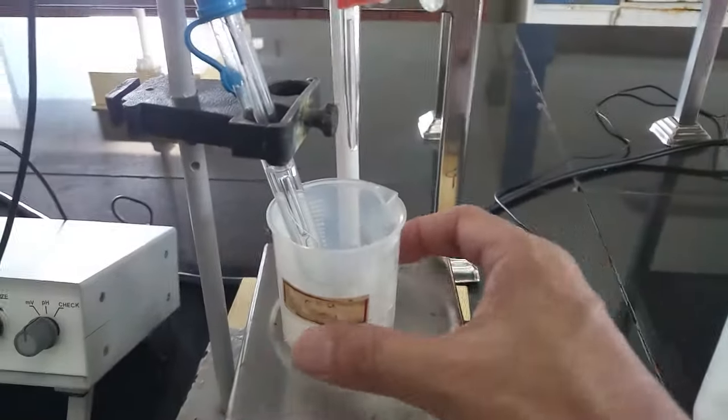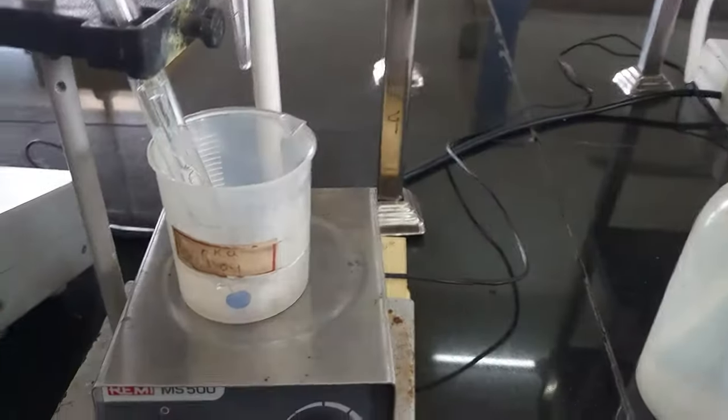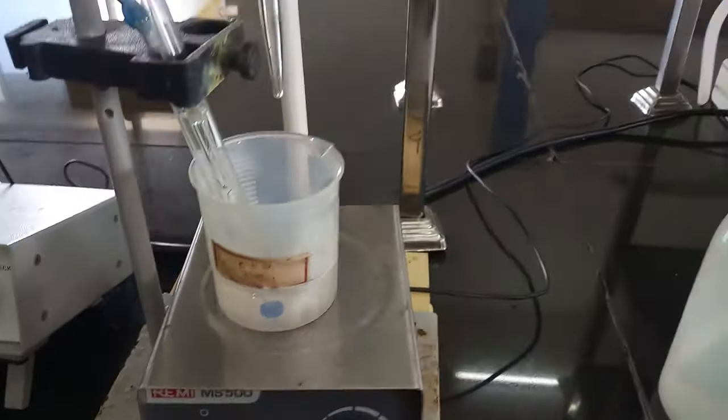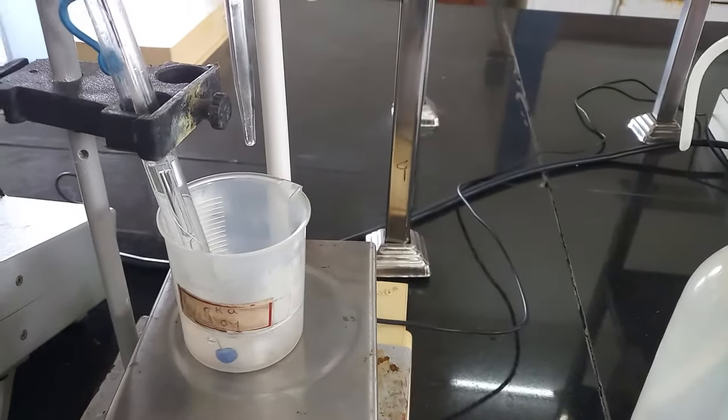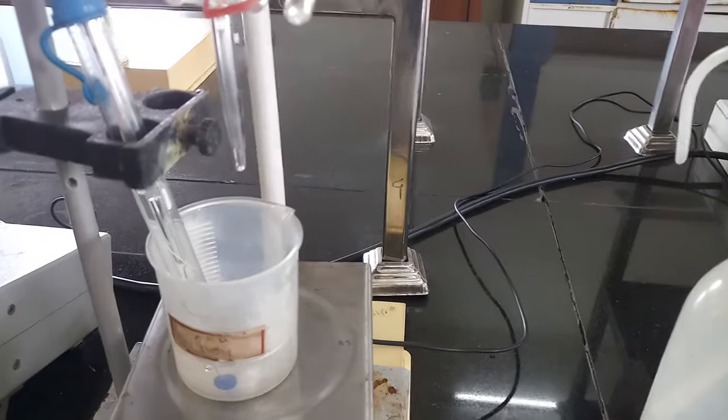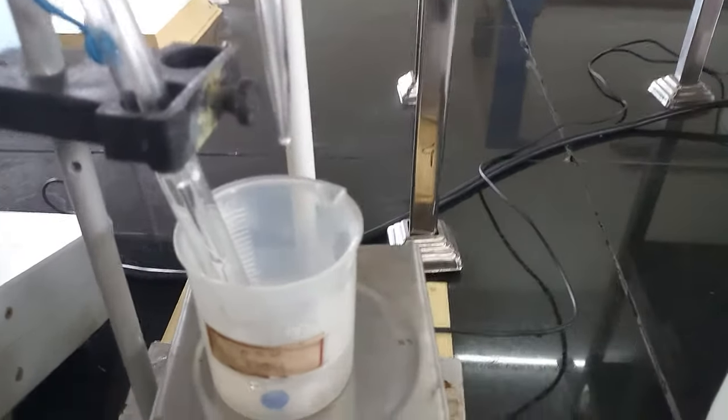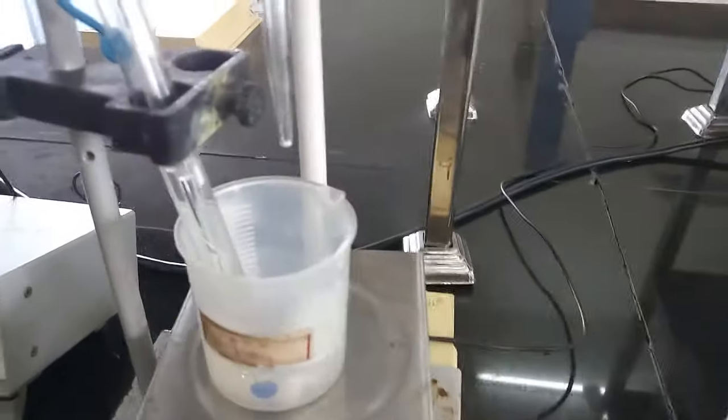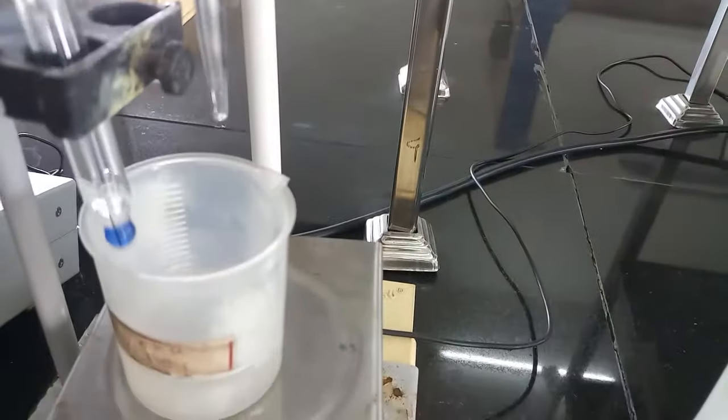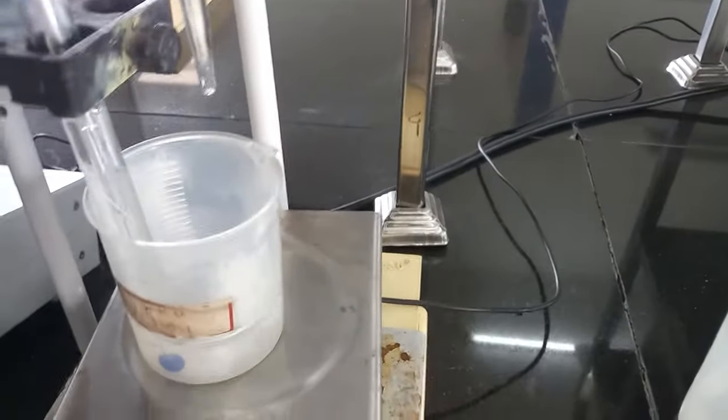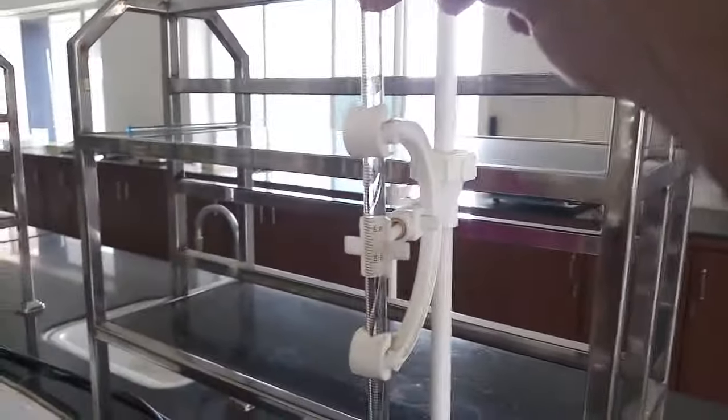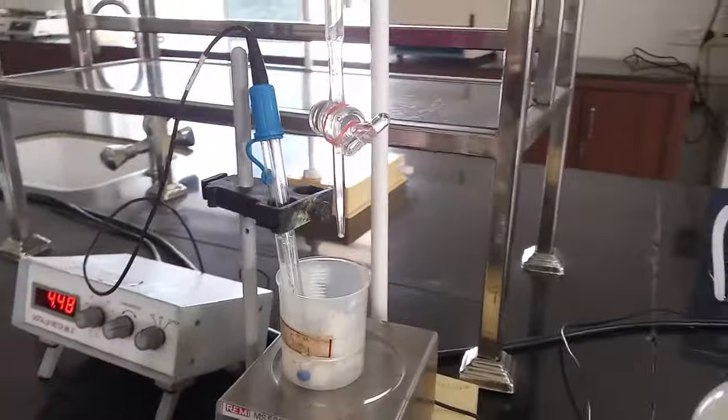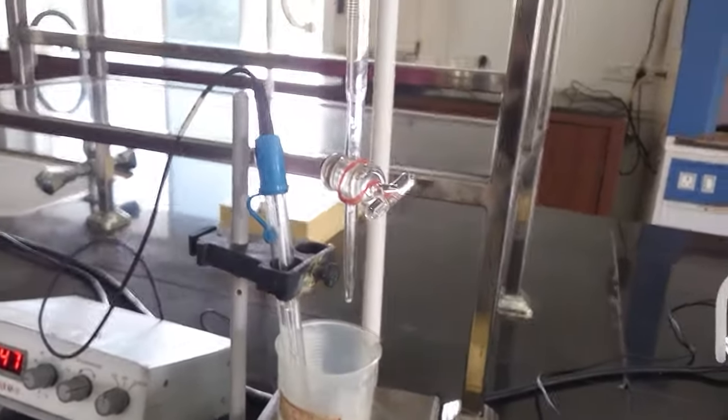So here we require the weak acid, acetic acid, and the pH electrode. Now this is the combination of glass electrode and standard calomel electrode. The pH electrode is dipped in acetic acid solution in the beaker, and the burette contains standard solution of sodium hydroxide.